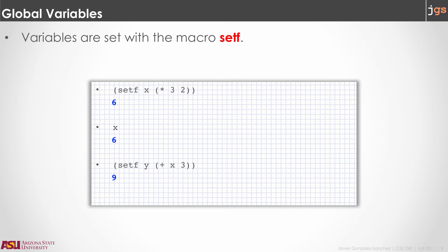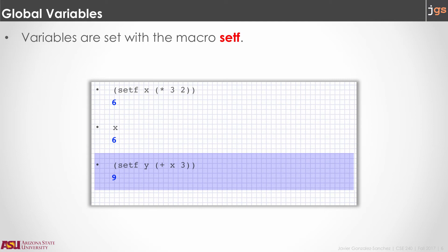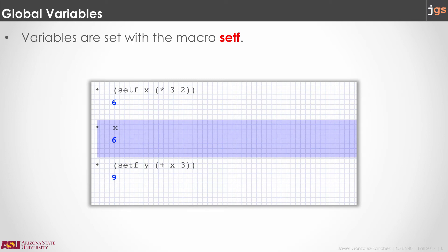Using SETF, we can define a memory location. SETF allows us to assign a name to that location and a value. In the first example, we are defining a location X and storing the value 6 there — that is the result of the multiplication 3 times 2. In the second example, we are defining a location Y and storing the value 9 there, because that is the result of the addition between X — which is 6 — plus 3. When you define a name for a location, you can use that name as a value. If you type that name in the interpreter, the interpreter will show you the value stored in that location. So typing X and pressing enter will print 6.